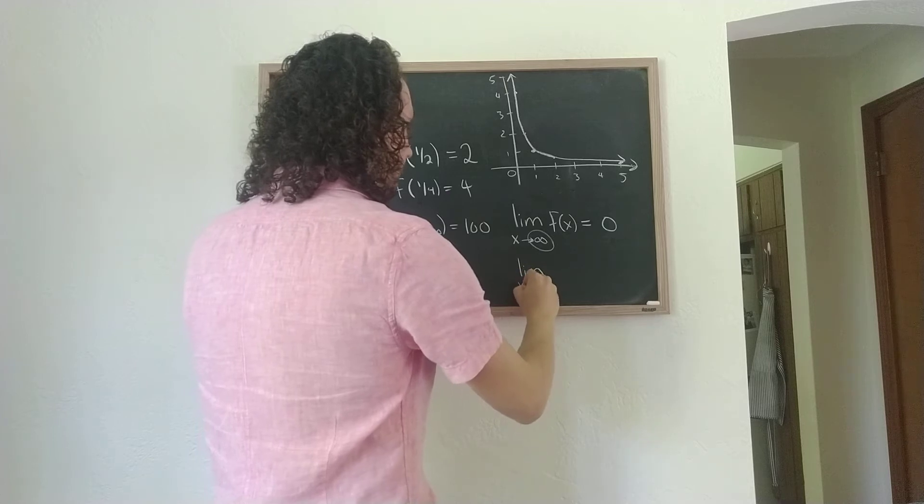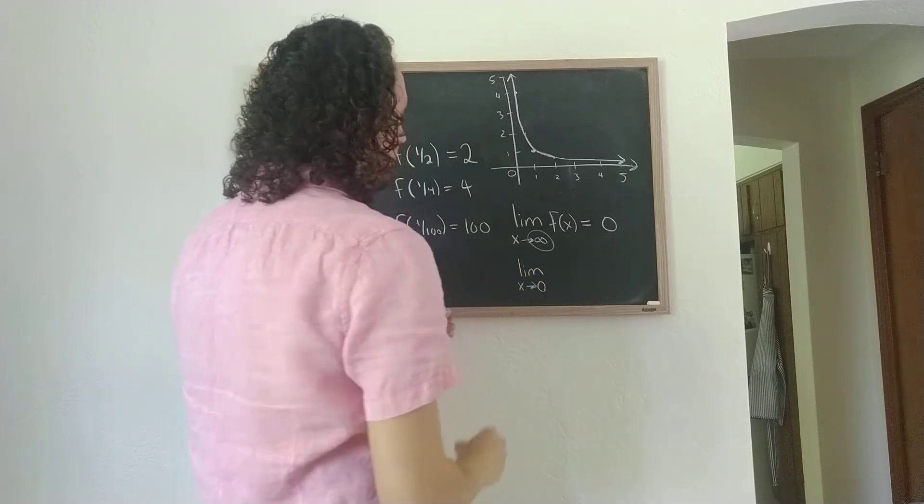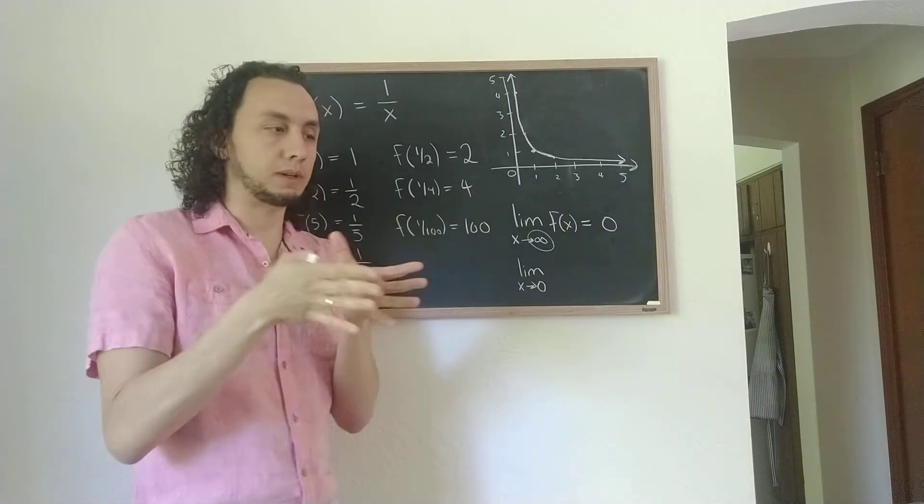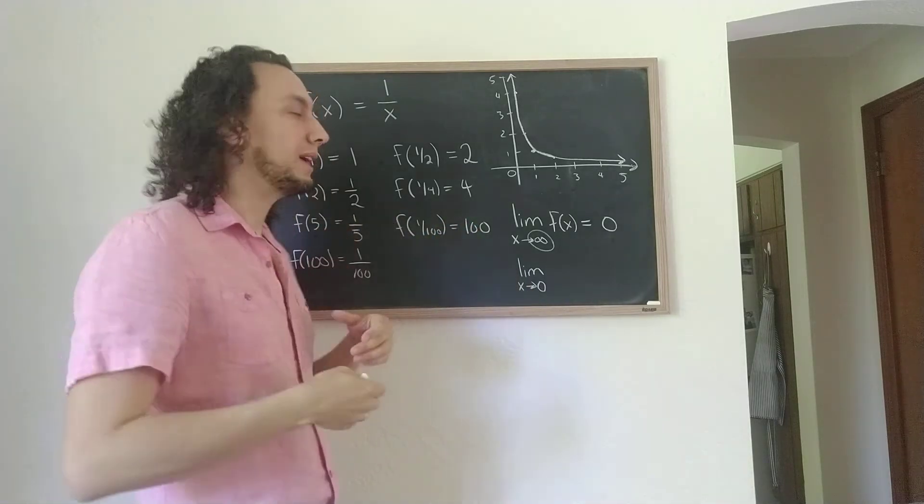is with the second limit that I sort of informally described. The limit as x goes to 0, and now there's a sort of technical thing here. When I say x goes to 0, what do I mean by goes to 0? I mean it gets smaller and smaller.